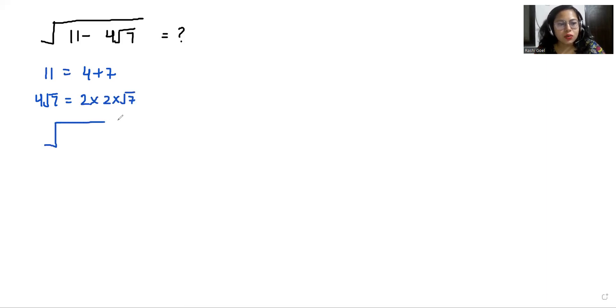Now I am going to replace this. So under square root: 4 + 7 - 2 × 2 × √7. Now 4 we know that it is a square of 2.